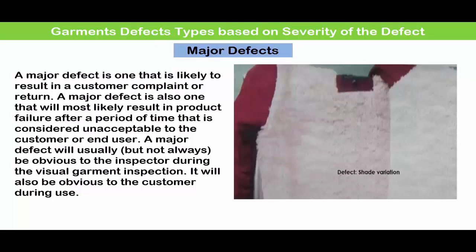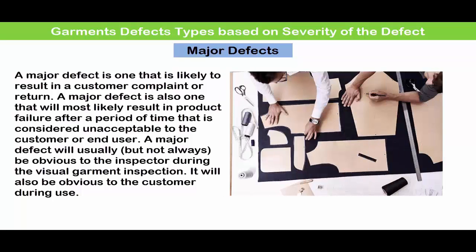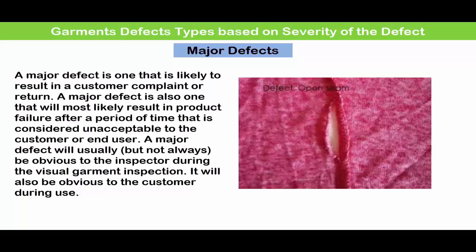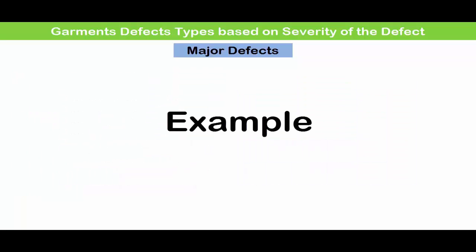Major defect. A major defect is likely to result in a customer complaint or return. A major defect is also one that will most likely result in product failure after a period of time that is considered unacceptable. A major defect will usually be obvious to the inspector during the visual garment inspection. It will also be obvious to the customer during use.